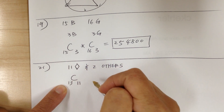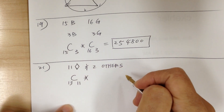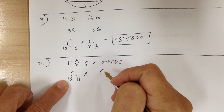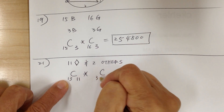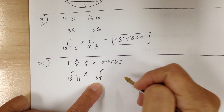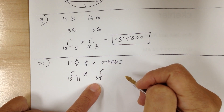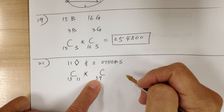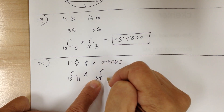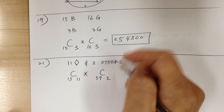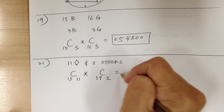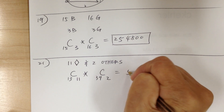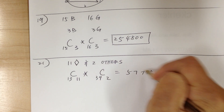You multiply and you have to get two others. There are 13 diamonds, which means there are 39 other cards — 13 hearts, 13 clubs, and 13 spades. So there are 39 other cards and you're going to choose two. Use your calculator and you get 57,798.